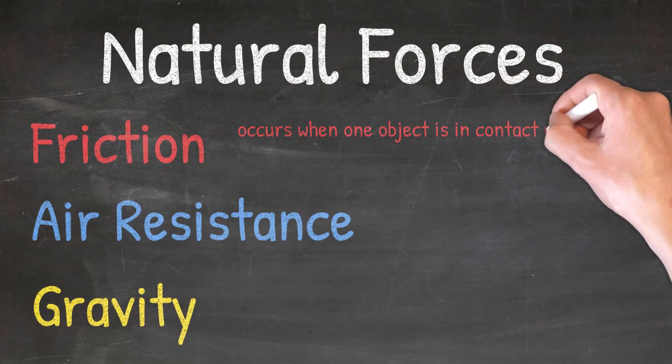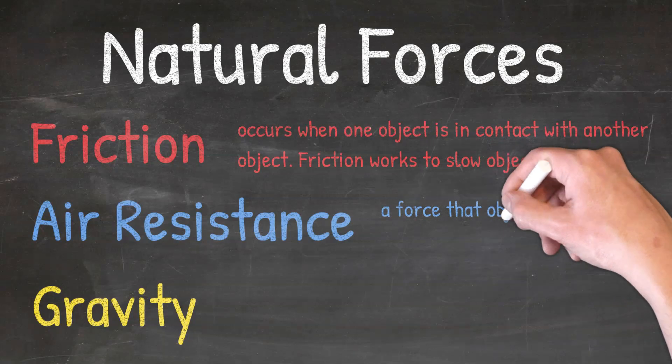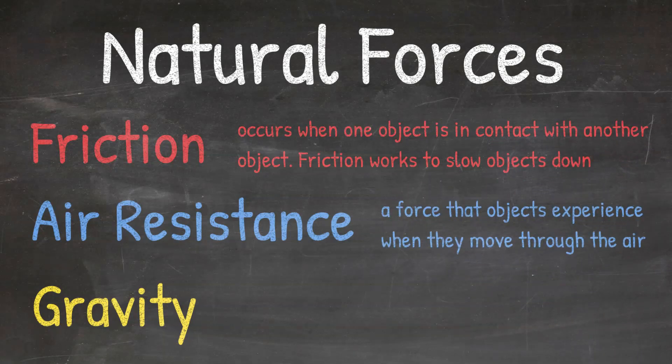Friction occurs when one object is in contact with another object. Friction works to slow objects down. Air resistance is a force that objects experience when they move through the air. Essentially, this is air molecules pushing against the object to slow it down.